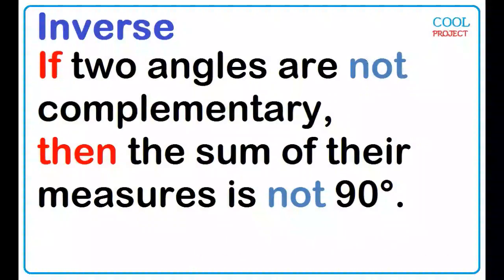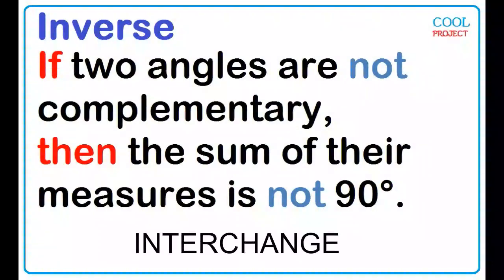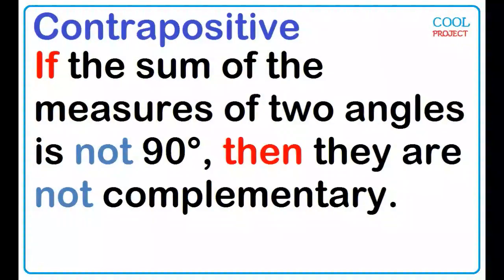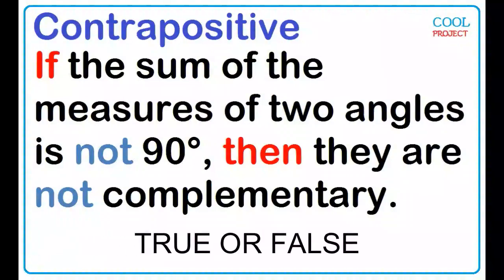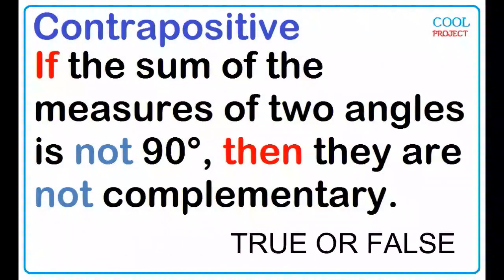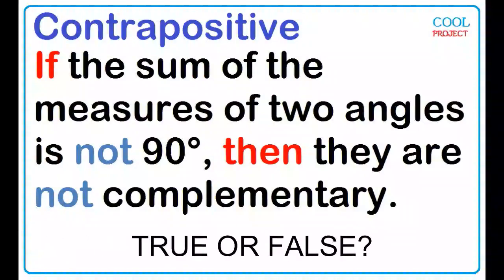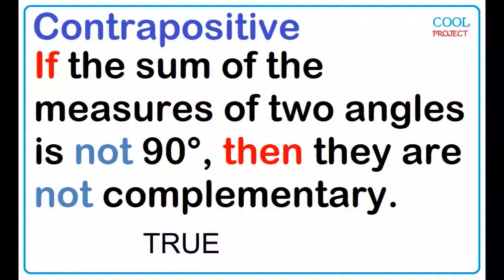To form the contrapositive of the conditional statement, interchange the hypothesis and the conclusion of the inverse statement. If the sum of the measures of two angles is not 90 degrees, then they are not complementary. The contrapositive can also be true or false. Is this true or false? True.